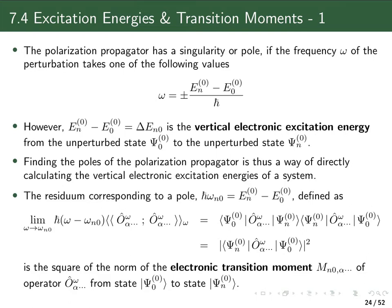If one looks at the sum of states expression in chapter three and performs this operation — taking the response function, multiplying it by this factor, and then letting omega go to omega n zero, the frequency of the excitation energy — one can see what one gets. It's just the numerator of the sum, which is called the transition strength, because it's the absolute square of the transition moment.